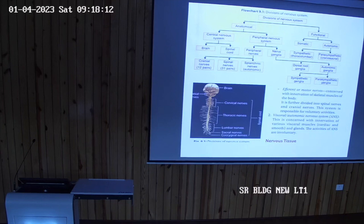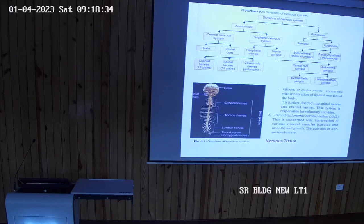The peripheral nervous system also consists of ganglia. The ganglia may be of two types: sensory ganglion, also called dorsal root ganglion, and autonomic ganglia. Autonomic ganglia are again of two types: they can be sympathetic or parasympathetic. This is the general classification.